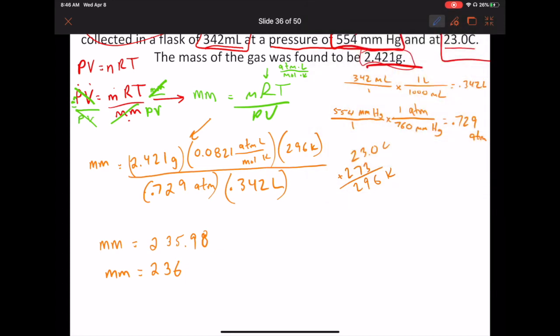Okay. So ATM cancels out. Because we have ATM here and here. Liters cancels out. We have it here and here. Kelvin. Kelvin. Okay. And then what's left is grams. And then divided by moles. Which is molecular mass. So that's great. So we have grams divided by moles here. So our answer should be 236 grams per mole.